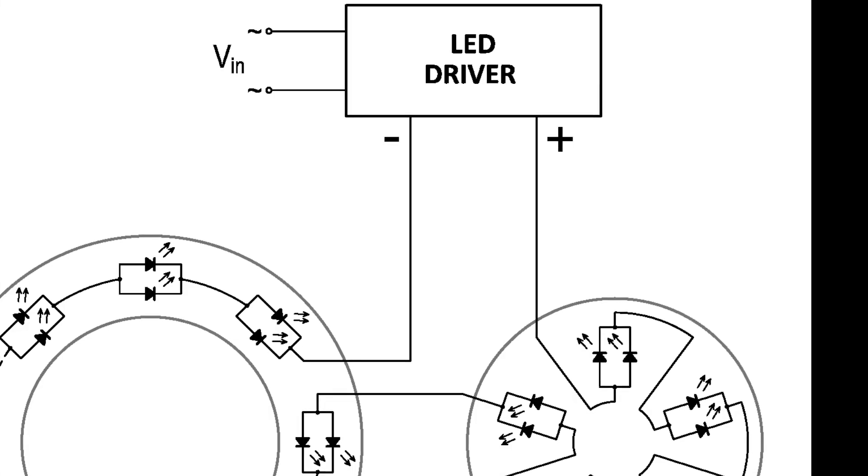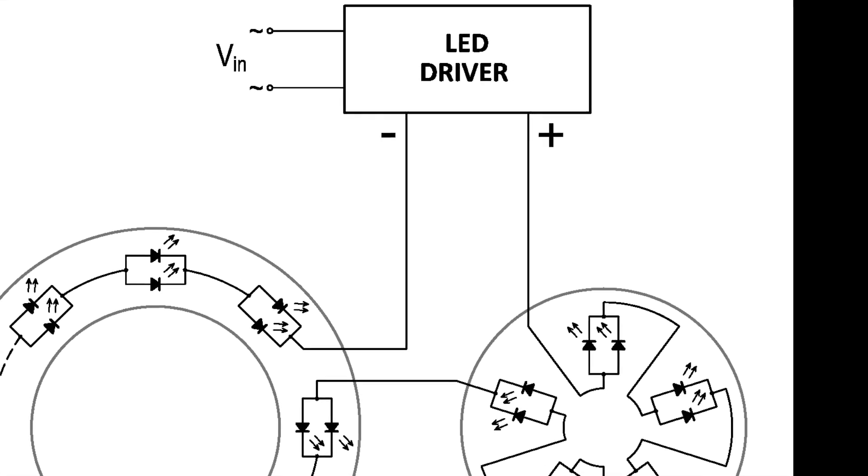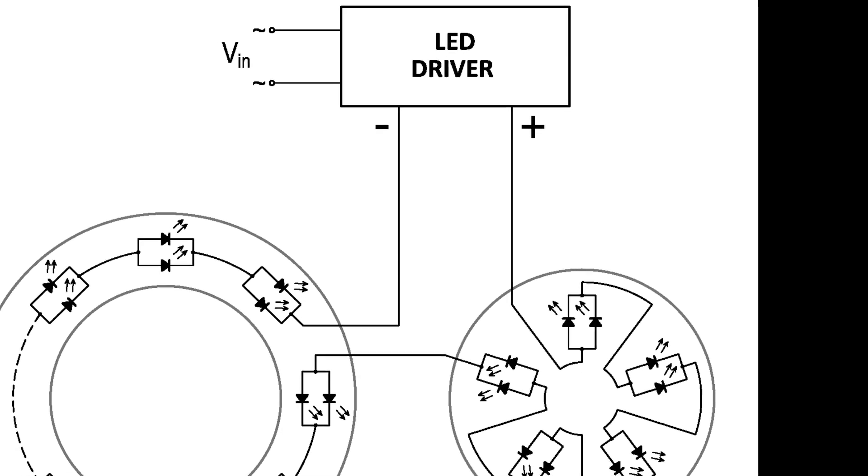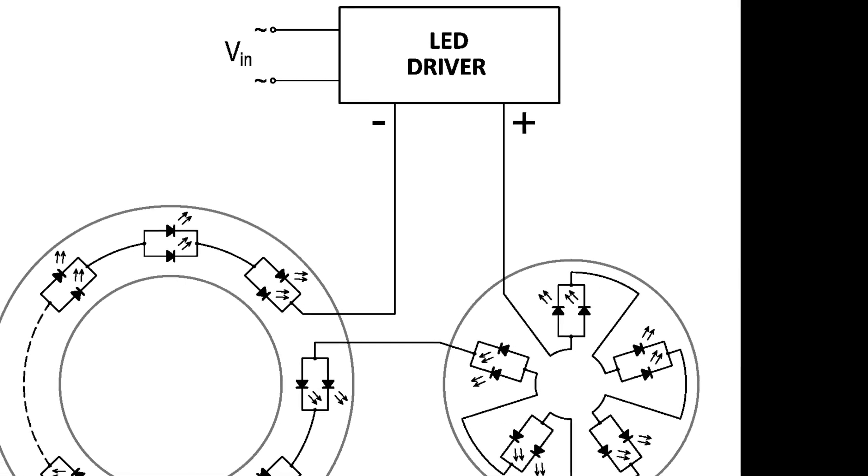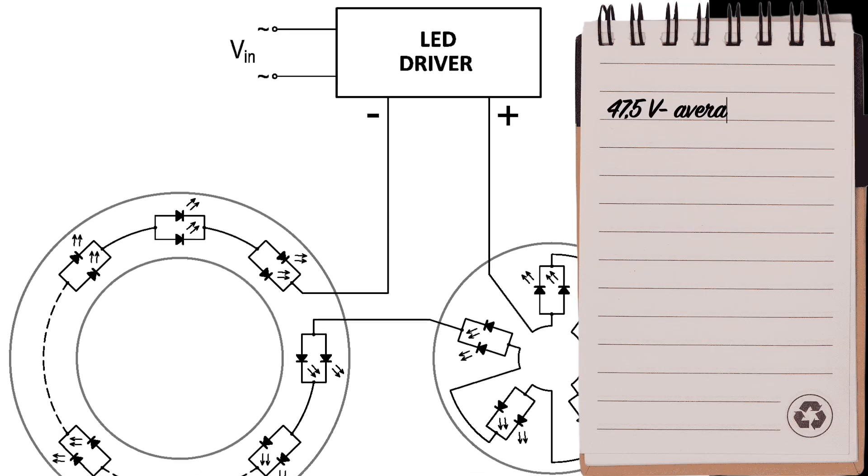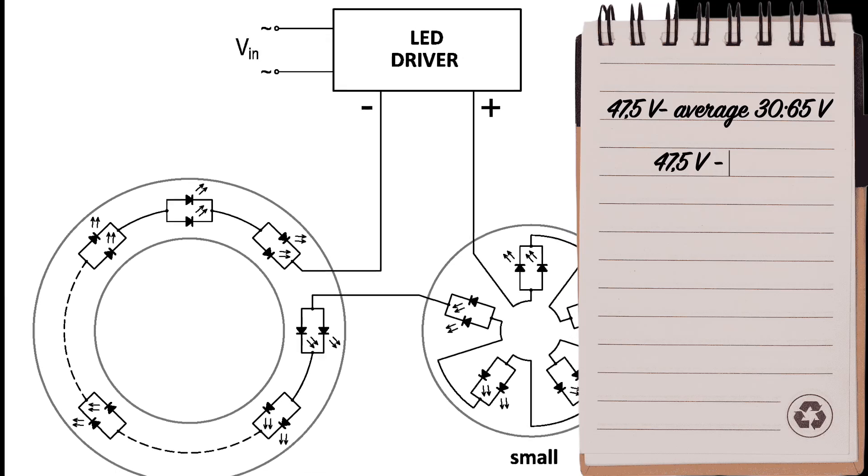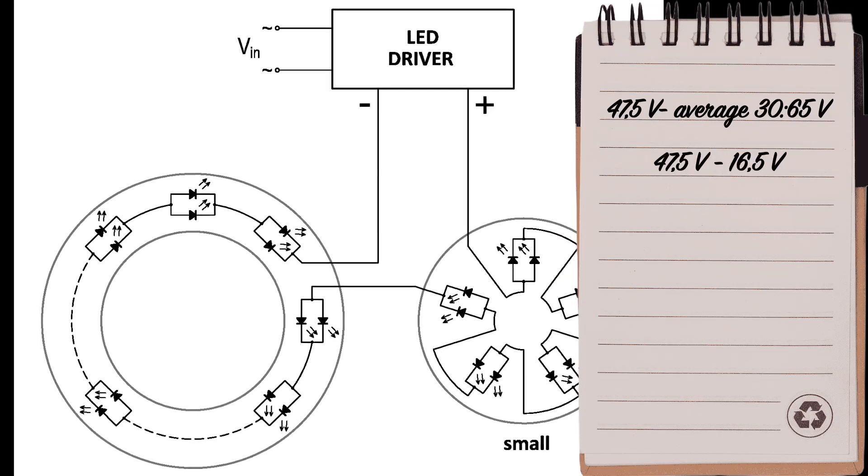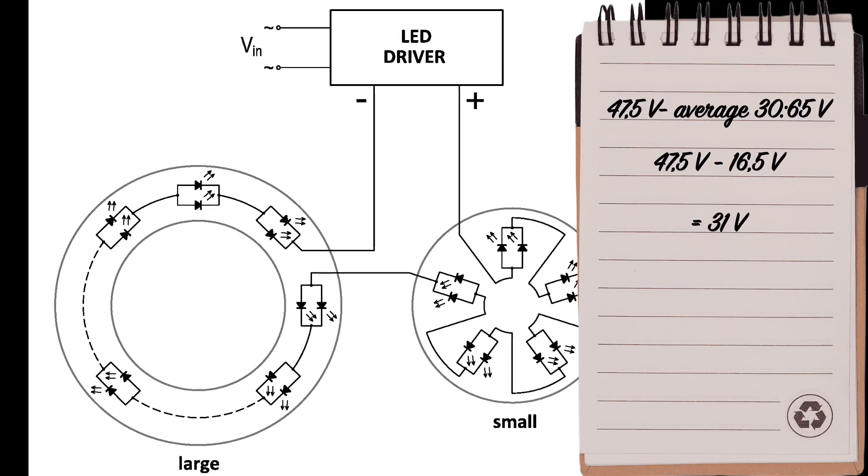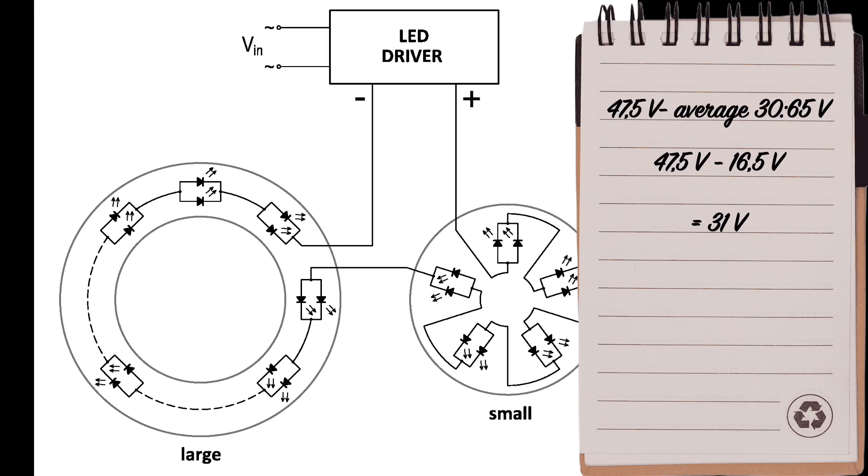Now let's calculate the operating voltage of a large LED section. We don't know the number of LEDs in a large section, so we'll do the calculation differently. We will take the average driver voltage from 30 to 65 volts, which is 47.5 volts, and subtract the voltage of the small section, which is 16.5 volts. This calculation is possible because the sections are connected in series. We get approximately 31 volts.